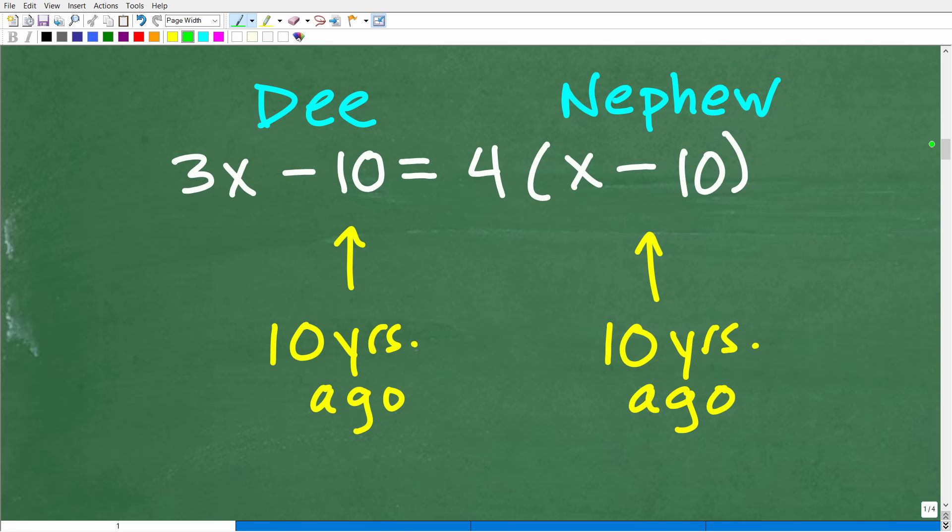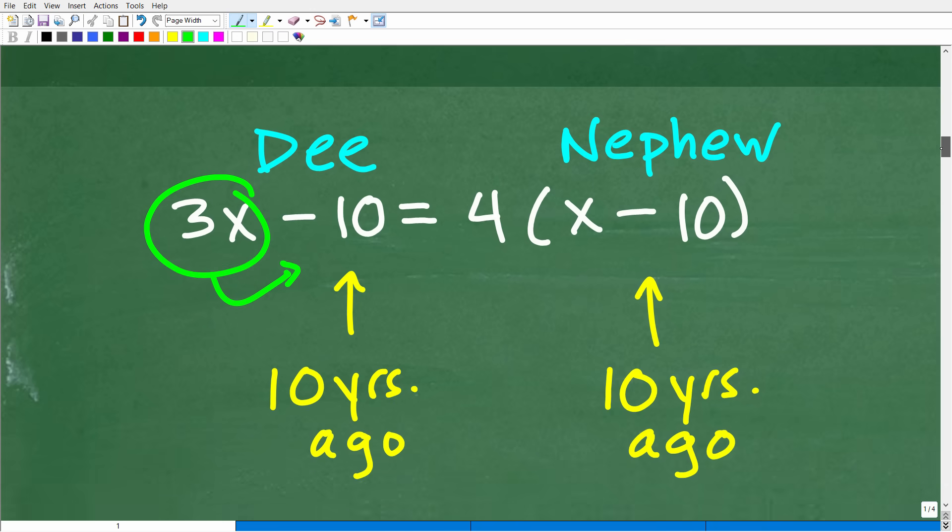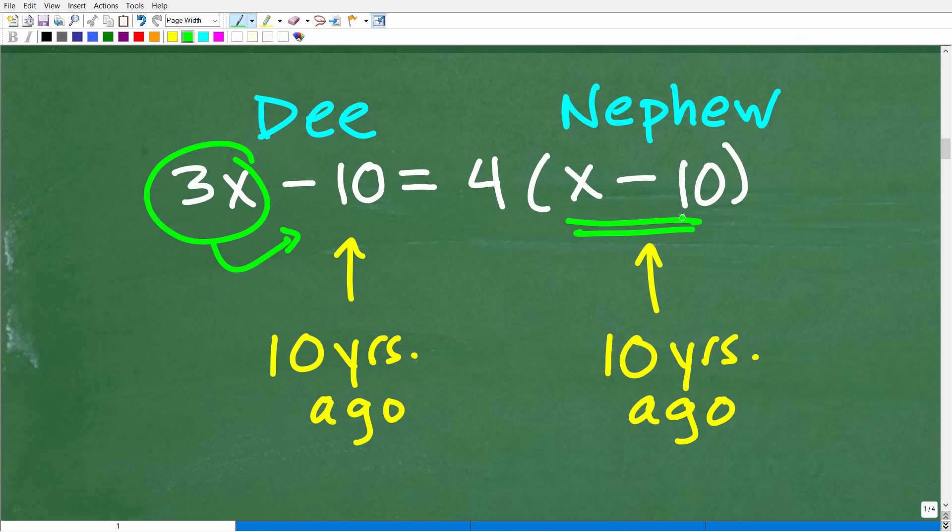So here we go. All right, so remember, Dee's current age is 3X, okay? So ten years ago, she was 3X minus 10, right? So ten is in years. So 3X minus 10 is how old Dee was ten years ago. Now, how old was the nephew ten years ago? Well, remember, the nephew's age currently is X. So ten years ago, he was X minus 10, okay? But remember, the problem says—let's go back to the problem, that's why you have to continue to reread these problems—so ten years ago, she was four times as old. Okay, so Dee was four times as old. So let's go back over to the problem. So whatever the nephew's age was ten years ago, if we multiply that by four, okay, that's going to be her age ten years ago.